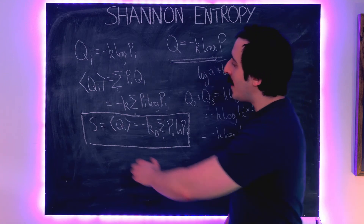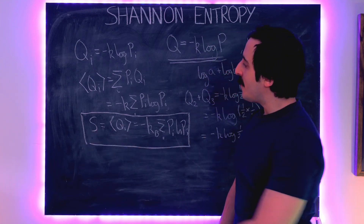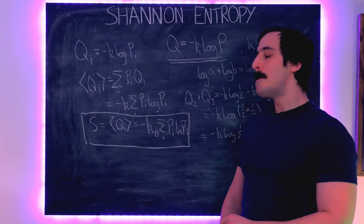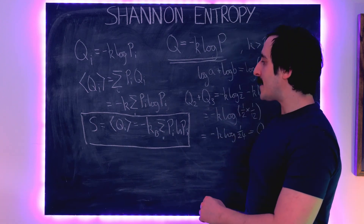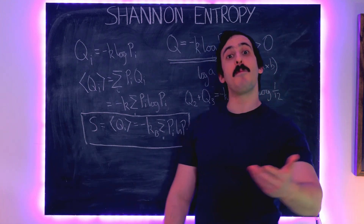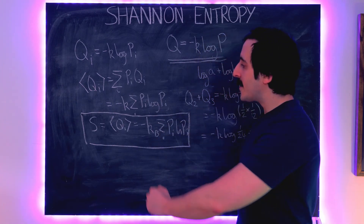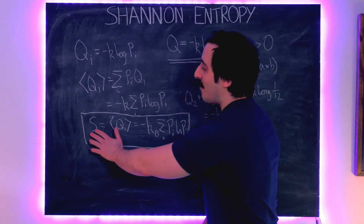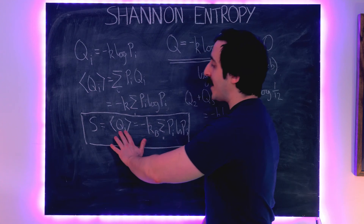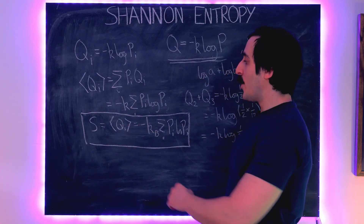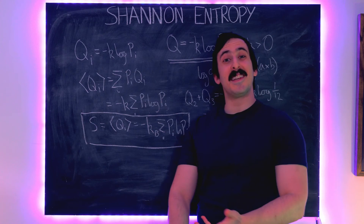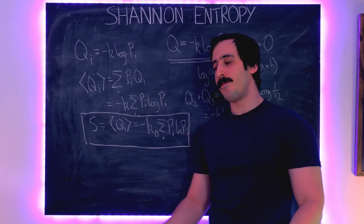What does this mean? In one sense, this equation tells us the amount of information we gain about our system following a statement or measurement. The higher the entropy, the higher the expected information content — we learn much more about our system than we knew before.